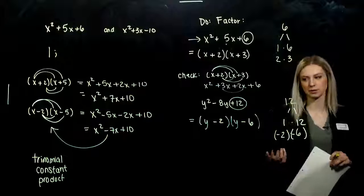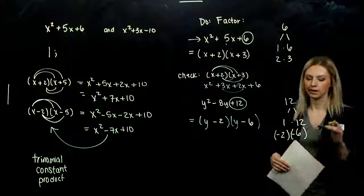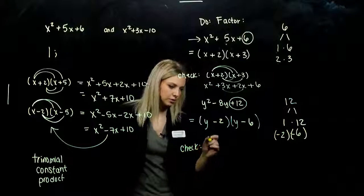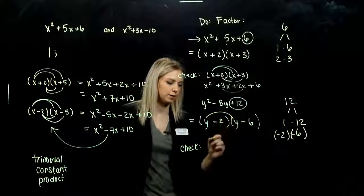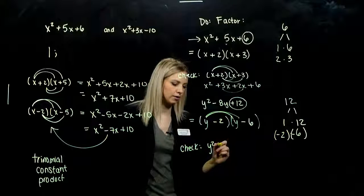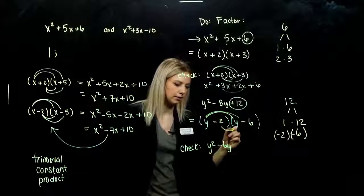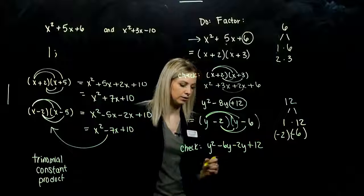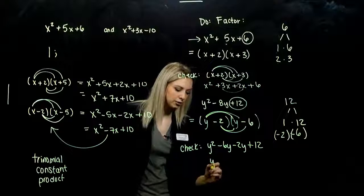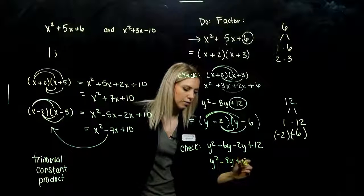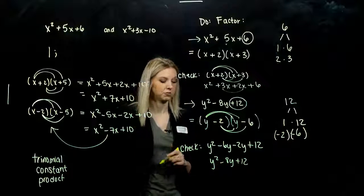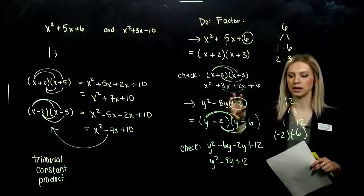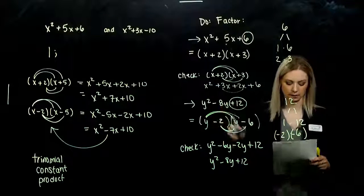The order doesn't matter — we could write y minus 6 first, then y minus 2, and still get the same trinomial when we FOIL it. But we can always check. If I do first, I get y squared; outer minus 6y; inner minus 2y; last, negative times negative gives positive 12. Combining our middle two terms — did we get to our original trinomial? Yes. We're looking for that combination: multiplying to my constant term, adding to the middle.